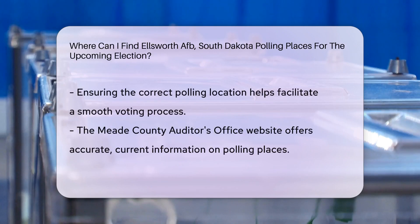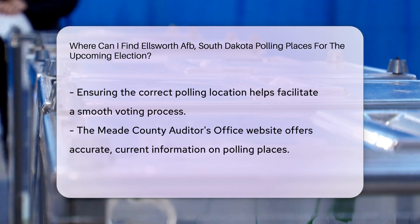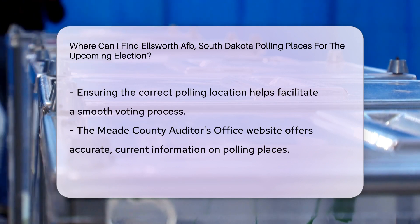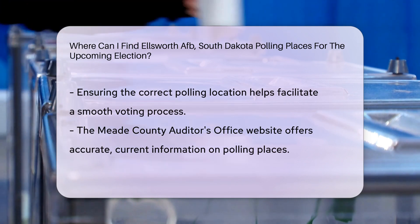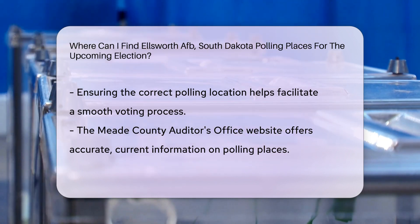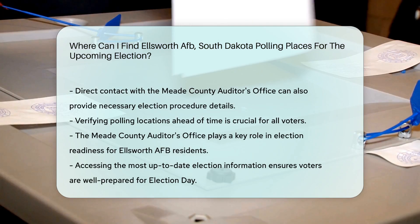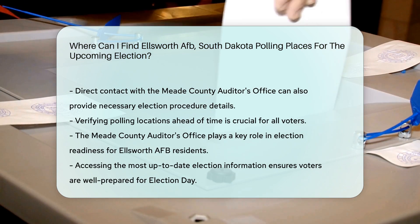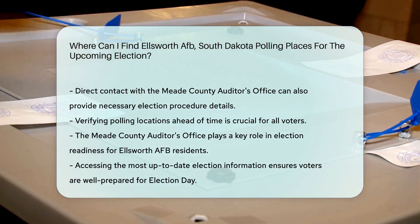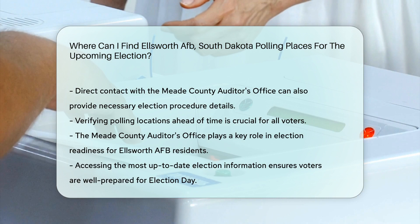It is essential for residents to verify their polling place location before Election Day to ensure they can easily cast their vote. By visiting the official Meade County Auditor's Office website or contacting them directly, residents can access accurate and up-to-date information on polling places and election procedures.